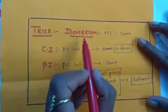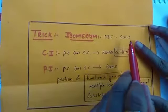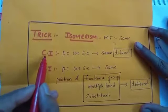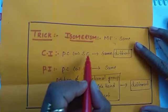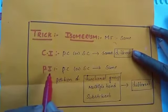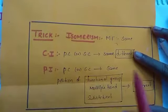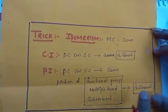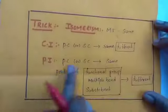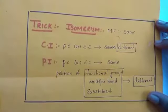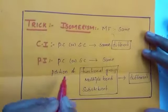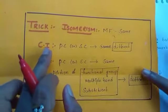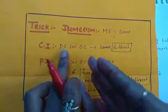Here is the trick. Isomerism: two compounds have the same molecular formula but at least one physical or chemical property is different. For chain isomerism, the parent chain or side chain must be different. For position isomerism, the parent chain and side chain must be the same, but the position of the functional group, multiple bond, or substituent must be different. Note: it is the position — not the nature — of the group that differs.